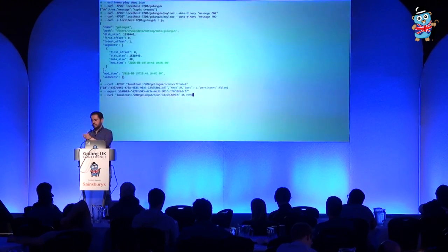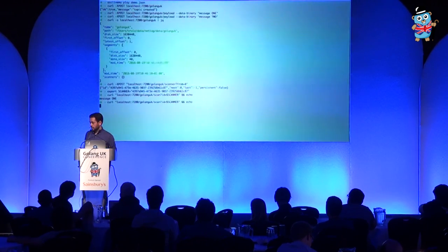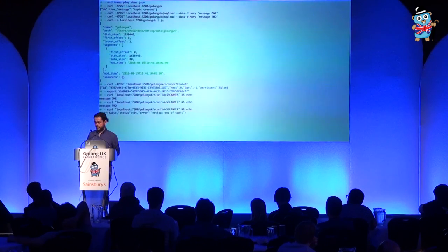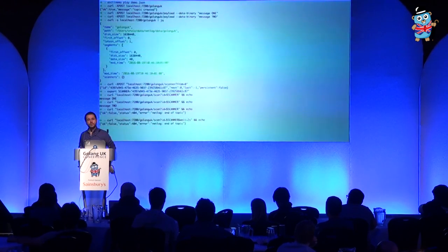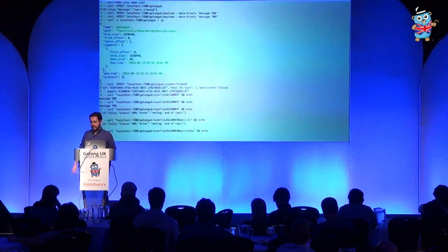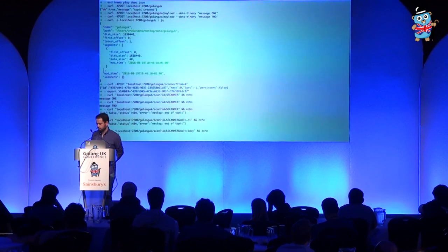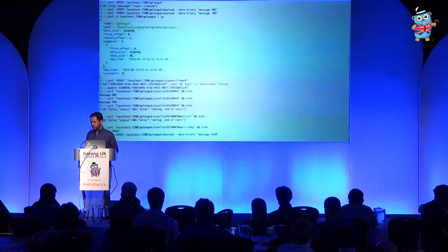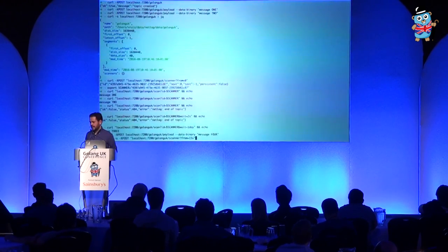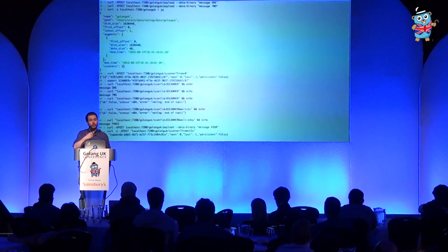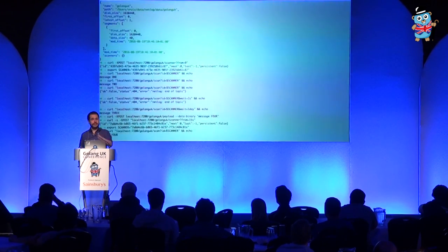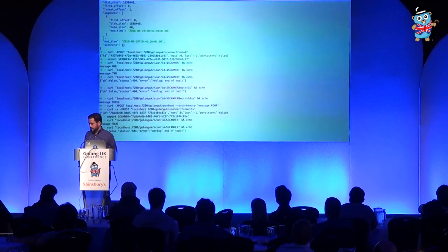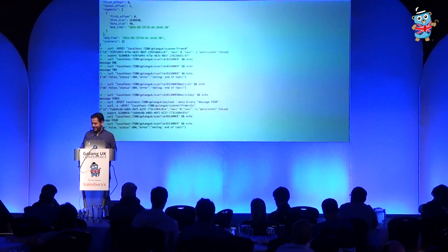We scan, scan, and then we reach the end of the queue. We get a message. You can define how long you want to wait for new data — here it waits two seconds and reports nothing. But you can say one day or even one year. So in this case we say we want to wait for one day, and in another window we write data to the queue, which arrives. We write some more just for show. Then we create a scanner from the last 15 seconds — meaning it's not from the beginning of the queue but only from the most recent message. We get a new scanner ID and scan only from the very end. It's not super impressive, but it's simple, and a lot of people might find that useful.